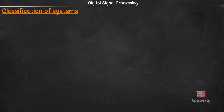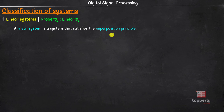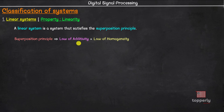First, we will study about linear systems. A linear system is a system that satisfies the superposition principle. This is the only necessary and sufficient condition to see if a system is linear. Any system which does not follow the superposition principle is called a non-linear system. The superposition principle is a combination of two different laws: the law of additivity and the law of homogeneity.